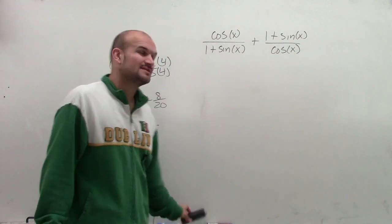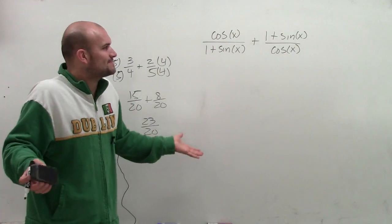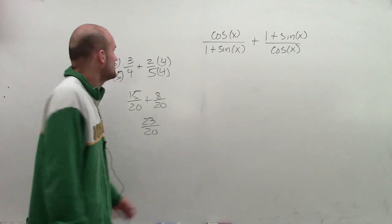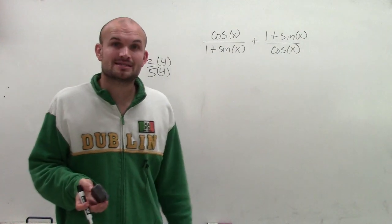So for this problem, I'm going to do the same thing. However, it's a little bit more difficult to look at these and say, what's my least common multiple between 1 plus sine of x and cosine of x? Well, what you notice is I multiply my two denominators by each other to find my least common multiple.